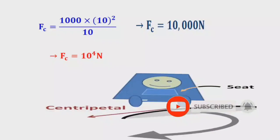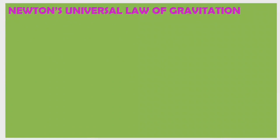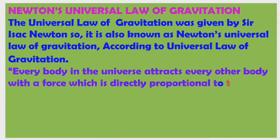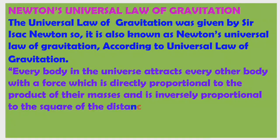This is the centripetal force required for the car to take the turn. Now we will see Newton's universal law of gravitation — this is very important. The universal law of gravitation was given by Sir Isaac Newton. According to this law, every body in the universe attracts every other body with a force which is directly proportional to the product of their masses and inversely proportional to the square of the distance between them.